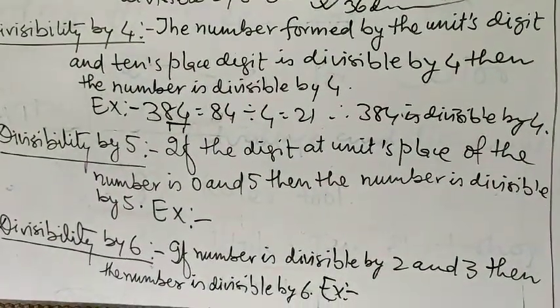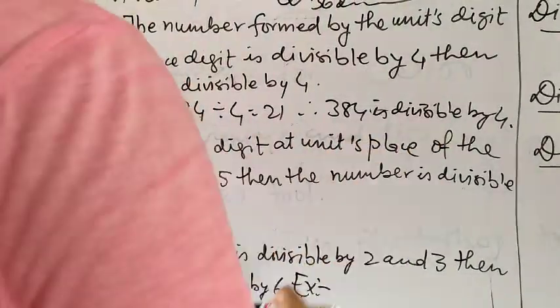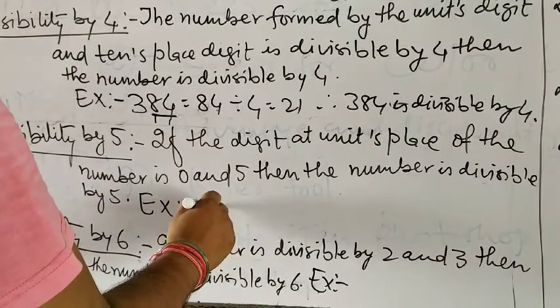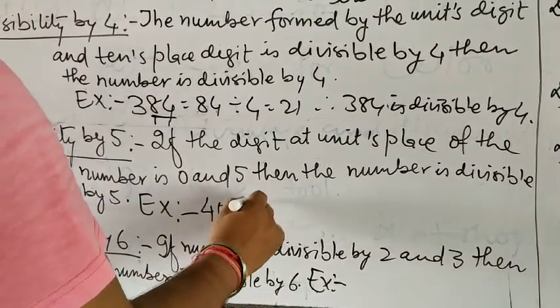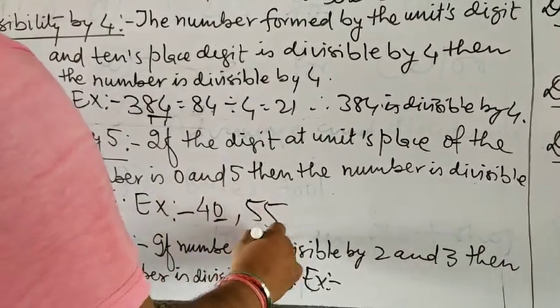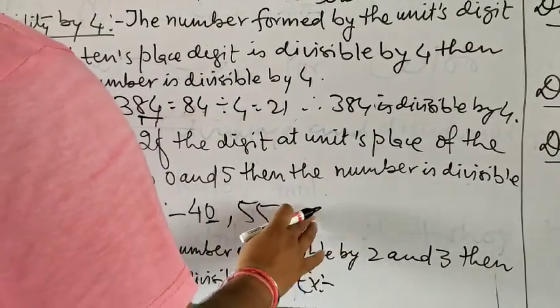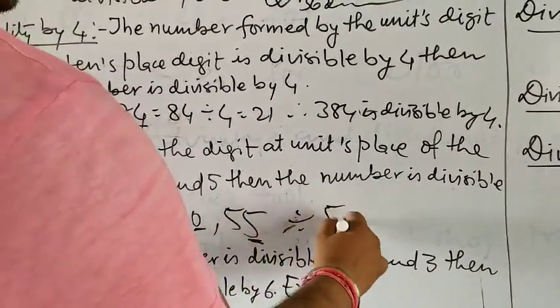Divisibility by 5: If the digit at unit's place of the number is 0 or 5, for example 40 and 5, its unit's place is 0 or 5, so it is divisible by 5.